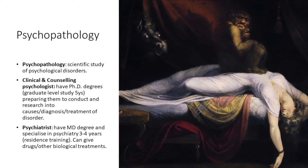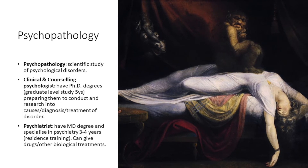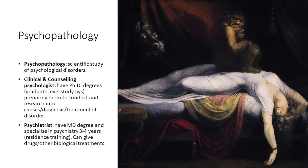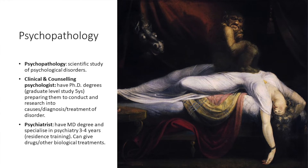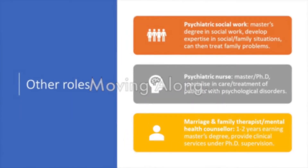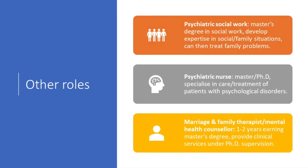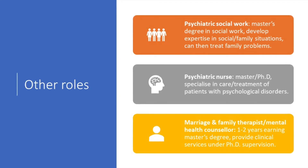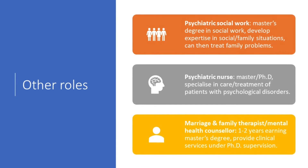A psychiatrist has a medical degree and specialises in psychiatry, which requires three to four years of residency training. They can prescribe drugs and provide other biological treatments. Psychiatric social work involves a master's degree in social work, developing expertise in social or family situations, and they can treat family problems.